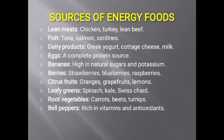Lean meats include chicken, turkey and lean beef. Fish such as tuna, salmon and sardines. Dairy products include Greek yogurt, cottage cheese and milk. Eggs are a complete protein source. Bananas are high in natural sugars and potassium. Berries include strawberries, blueberries and raspberries. Citrus fruits include oranges, grapes and lemons. Leafy greens include spinach, kale and Swiss chard. Root vegetables such as carrots, beets and turnips are rich in vitamins and antioxidants.